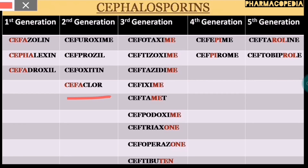Talking about the fourth generation cephalosporins, it consists of cefepime and cefpirome. You have to remember the term 'pi' in order to identify the fourth generation cephalosporins. Moving ahead to the fifth generation cephalosporins, that is ceftaroline and ceftobiprole.